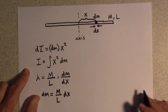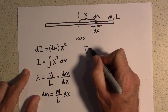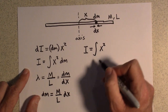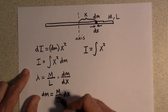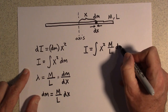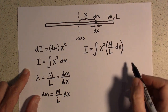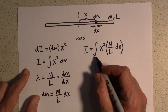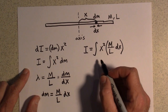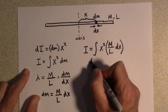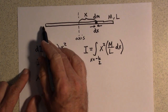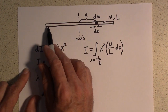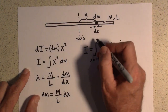Now substituting dm = (M/L)dx into the integral, the moment of inertia for the whole slender rod becomes I = ∫x²·(M/L)dx. The limits of integration go from x = -L/2 to x = L/2, since the axis is at the center, which we take as the origin.